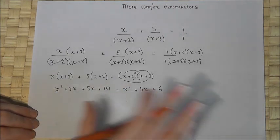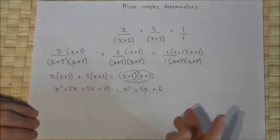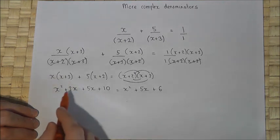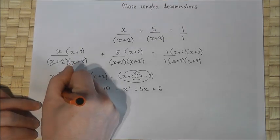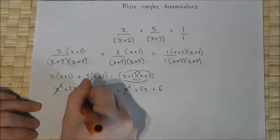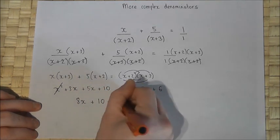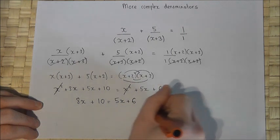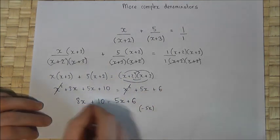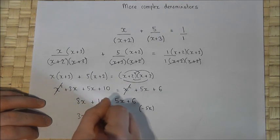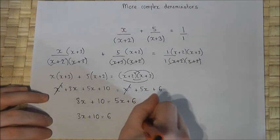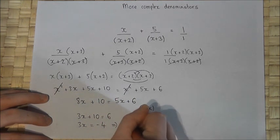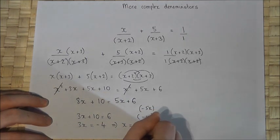We now have an equation with all fractions and brackets gone. Step one is to simplify: there's an x squared on both sides so they cancel. Then 3x plus 5x is 8x, so 8x plus 10 equals 5x plus 6. Taking away 5x from both sides gives 3x plus 10 equals 6. Taking 10 from both sides: 3x equals minus 4, so x equals minus 4 over 3.